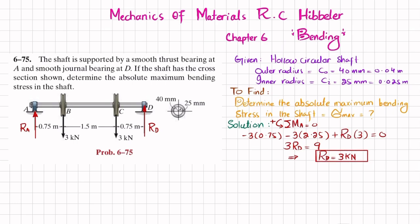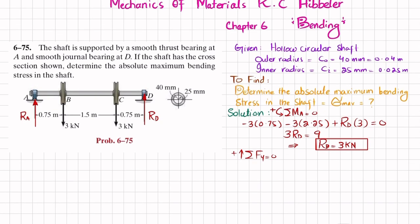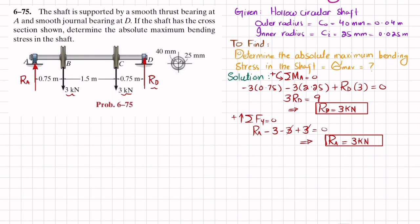Now we find Ra using the sum of all forces in the y-direction equals zero, taking upward as positive. Ra minus 3 minus 3 plus Rd, which is 3, equals zero. So Ra equals 3 kilonewtons. Now that we have Ra and Rd, we move toward finding the shear force and bending moment diagrams to find the maximum bending moment and maximum bending stress.